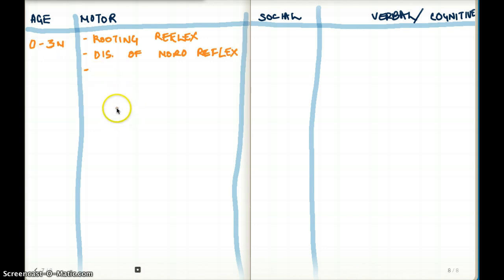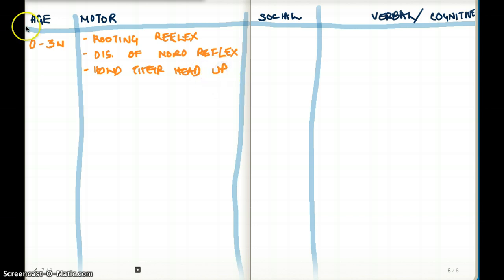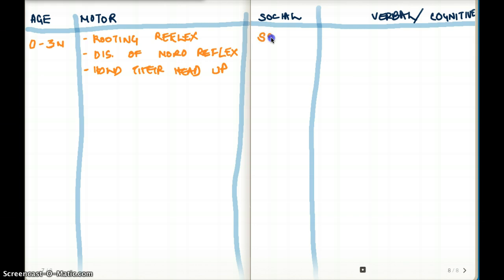That Moro reflex is going to disappear between zero to three months. They will also be able to hold their head up — that will happen anytime between zero to three months. Now let's talk about social. The first thing that's going to happen socially between zero to three months is they're going to have a social smile.